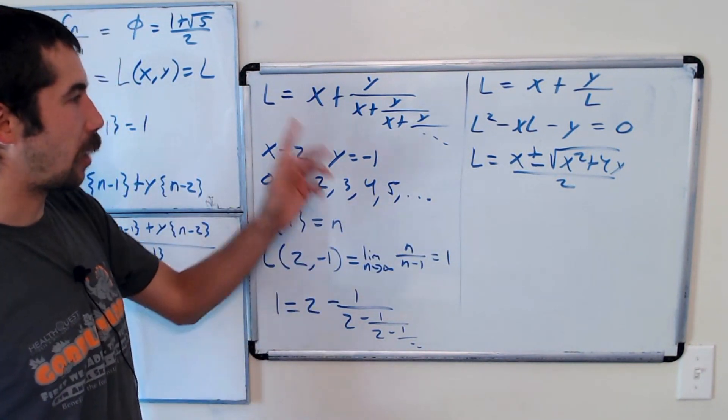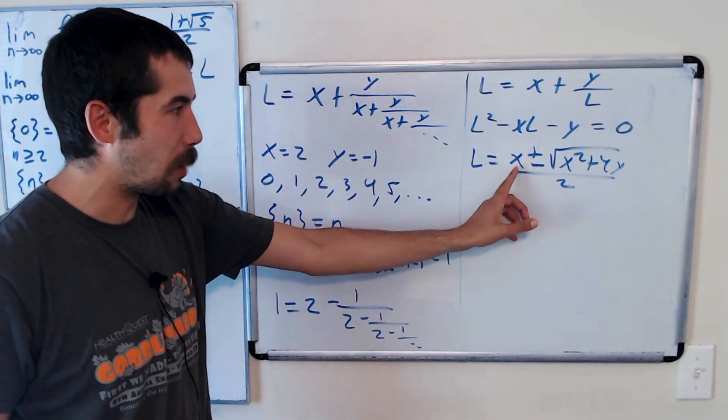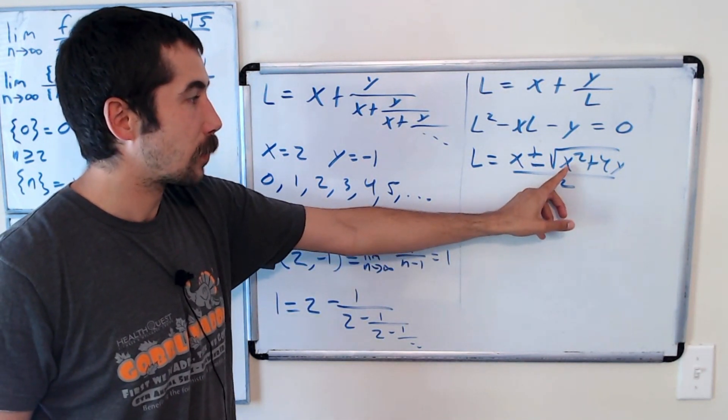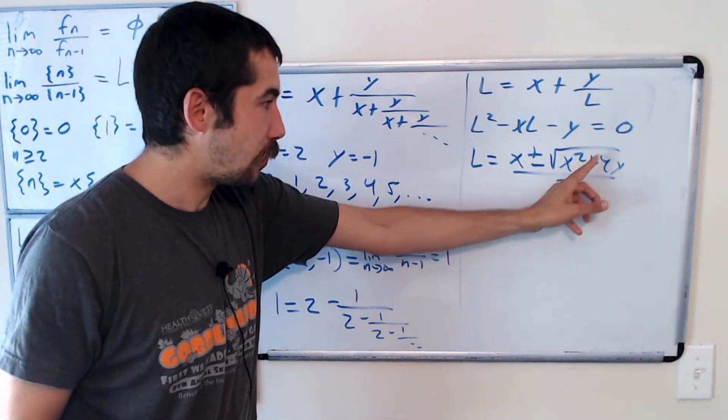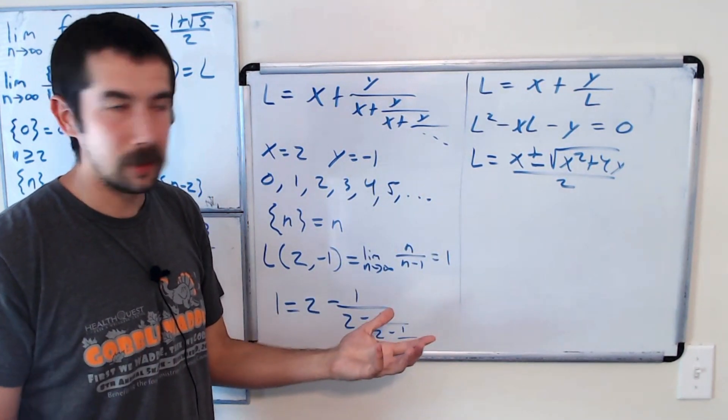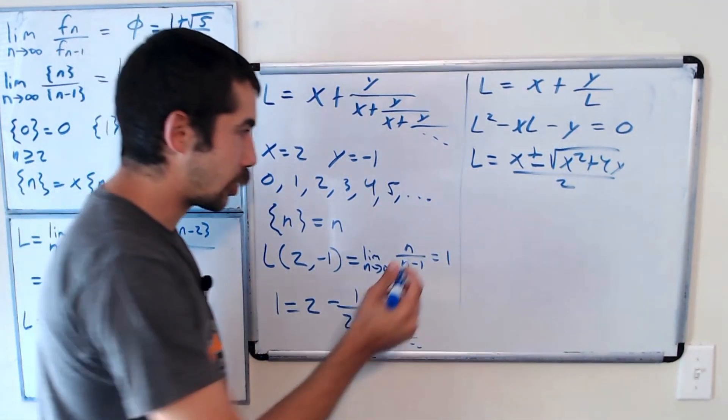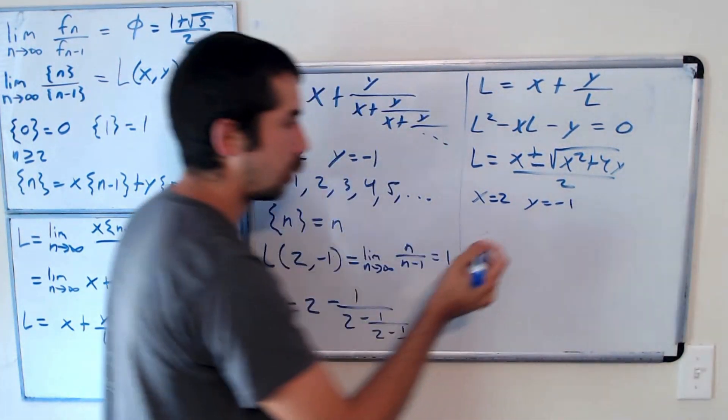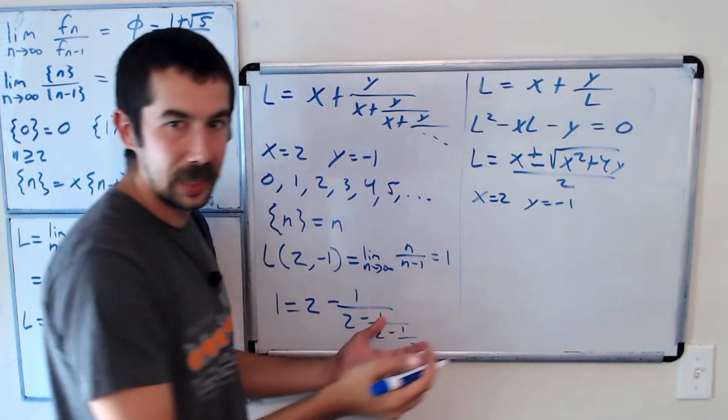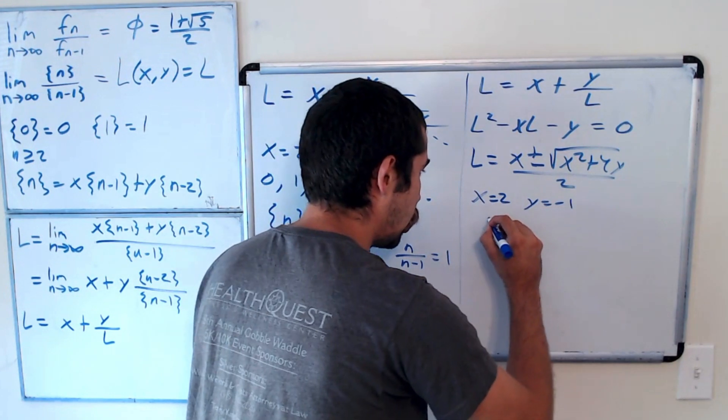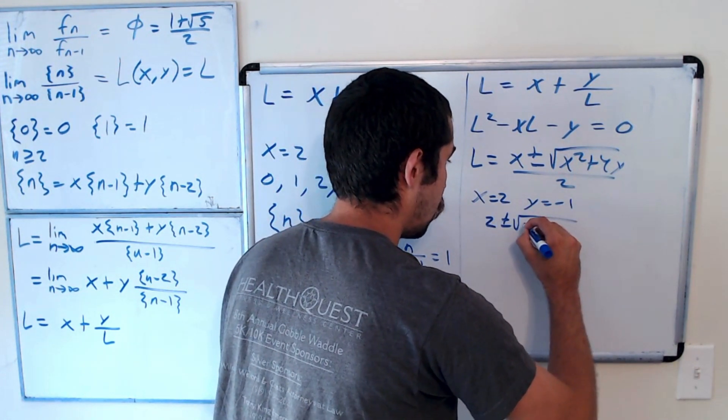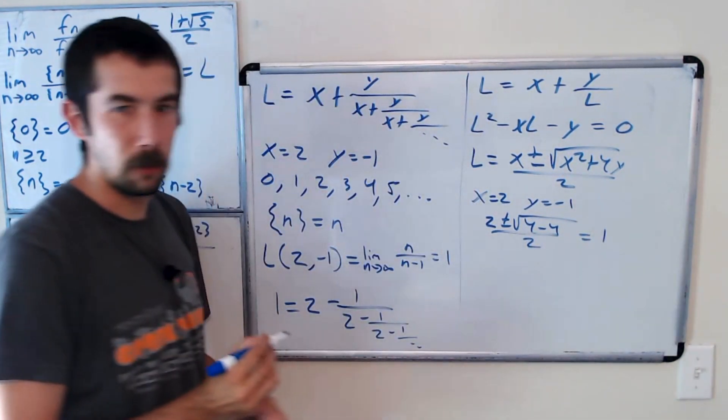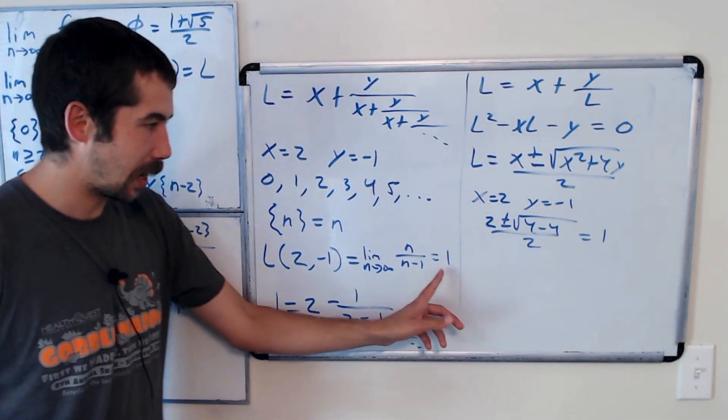And let's just check if this works. So if we had x equals 1 and y equals 1, we would get 1 plus, we would just use pluses in this case, 1 plus 4, so square root of 5 over 2, which is the golden ratio. If we were to plug in x equals 2 and y equals negative 1, we should get the answer of 1. And we do. We get 2 plus or minus the square root of 4 minus 4 over 2, which is 1, as we expected.